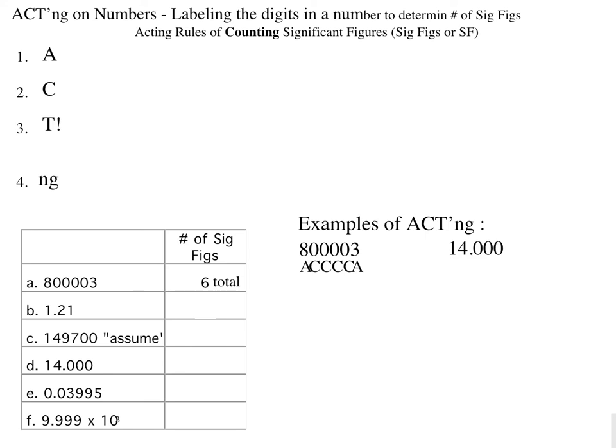If we consider 14.000 and apply our acting rules, both the 1 and the 4 are non-zero digits and are given the symbolism A. The trailing zeros are significant because the number contains a decimal point. This number, 14.00, has 5 significant figures.